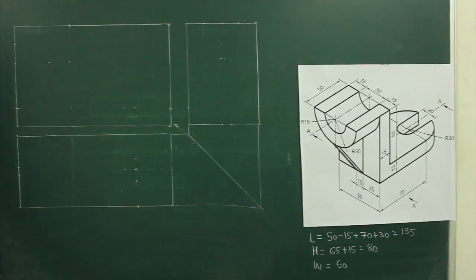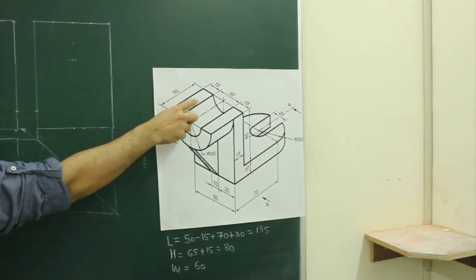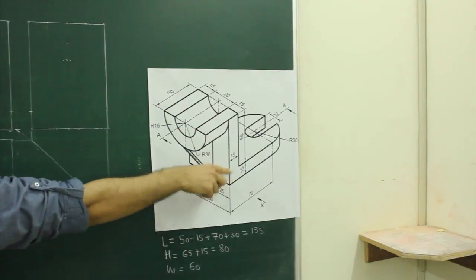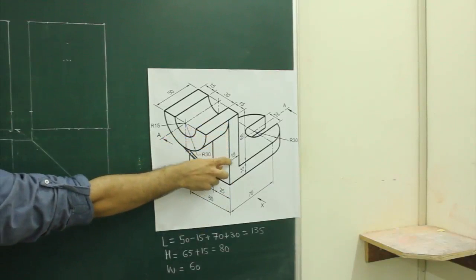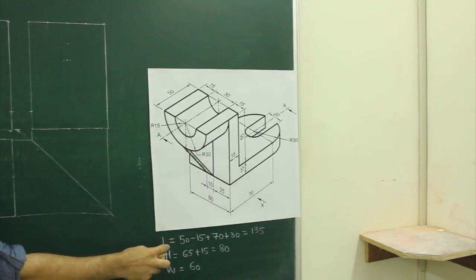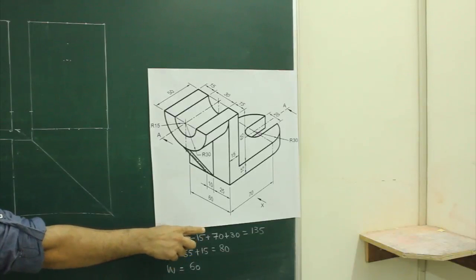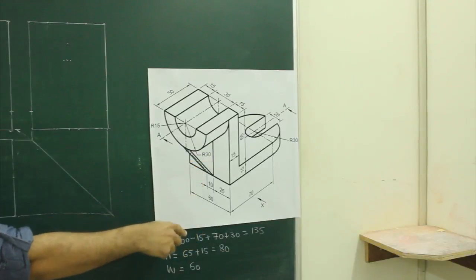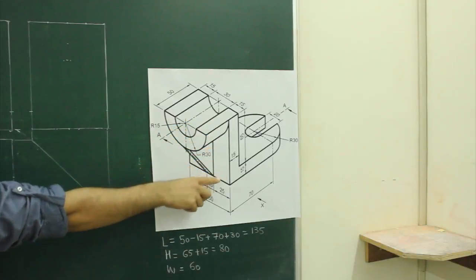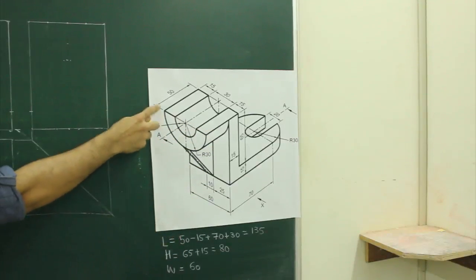In this sum, we have a length 50, then if you come over here, you see 70 and 30. But if you see, this 15 is overlapping, so length would be 50 minus 15 plus 70 plus 30, so length would be 135. Height is 80, that is 65 plus 50, and width is 60. So first we will draw the side view.